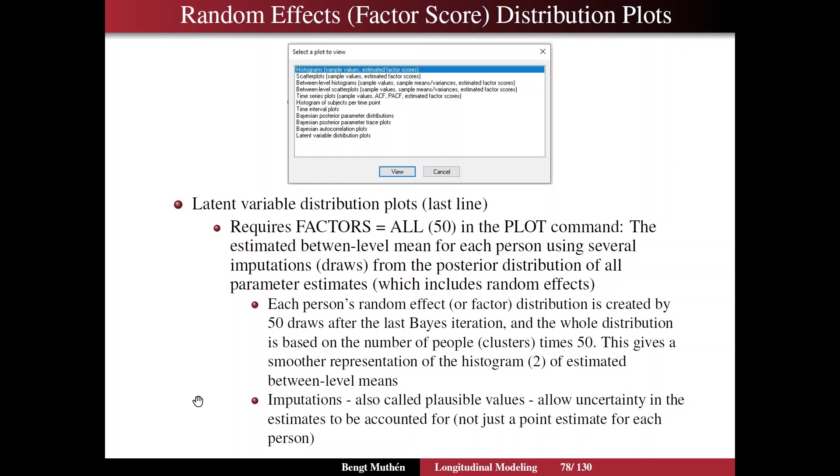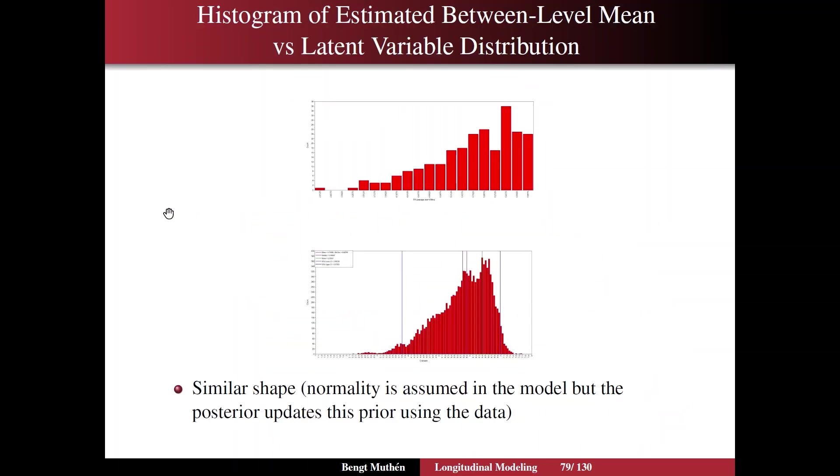And it's an interesting idea, this imputation idea, that these random draws from the posterior distribution. They're also called plausible values. They allow uncertainty in the estimates to be accounted for. So if you think about this, it could be very useful for a single person, that you get not just one factor score, or a factor score plus a standard error of that factor score, but you get a whole distribution of 50 values for this person. So a much better representation of the random effect for this person. And here then finally, in the plot area...